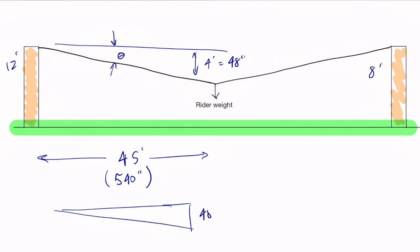If we've got 48 over 540, we calculate tangent inverse of 48 over 540 equals 5.1 degrees. This is going to help us calculate the tension forces in this line.